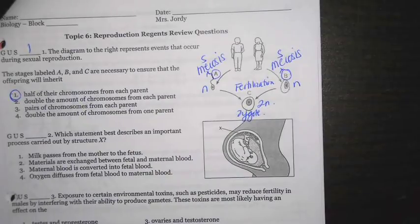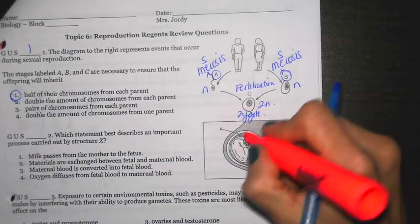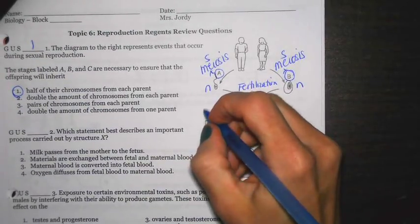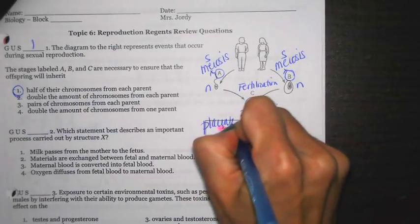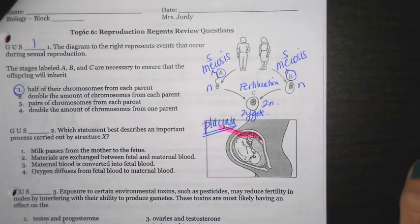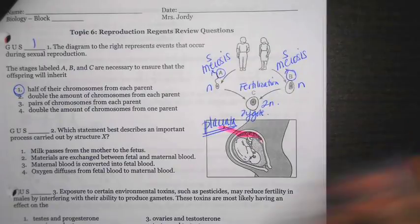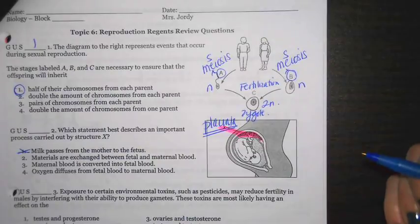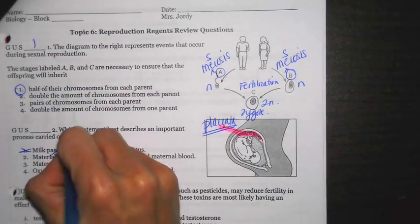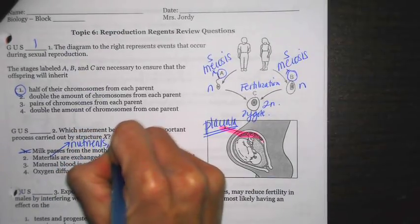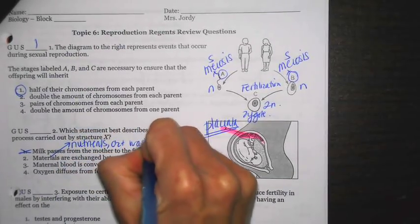Number 2. Which statement best describes the importance of the process carried out by structure X? Again, label, label, label. X represents the placenta. Now it wants to know what exactly is the function of this. Number 1 says milk passes from the mother to the fetus. No. They probably stick that there because they're thinking breast milk, but breast milk is not going through the placenta. Number 2 says materials are exchanged between the fetal and maternal blood. These materials include things like nutrients, oxygen, and waste products. That could be it.